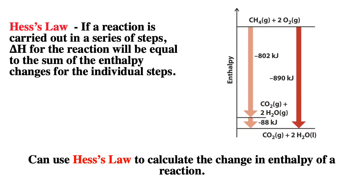If we look at the simple process of burning methane — starting with methane plus oxygen — we can imagine it occurring in two steps: the first where you form CO2 gas and gaseous water, and a second step where the gaseous water is converted into liquid water. Internal energy and enthalpy are both state functions, meaning the change only depends on the final and initial state. So for this reaction, it does not matter if we do it in one step or two steps.